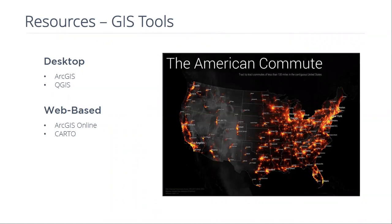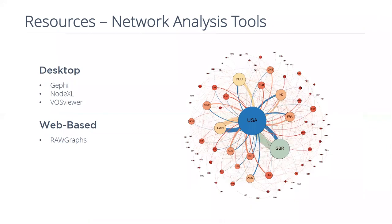For network analysis — looking at how different entities like people or publications have relationships with each other — Gephi is probably the most popular tool right now. It is very buggy and difficult to use, with a lot of technical terms you'll have to look up, but it's free and open source. NodeXL is an extension you can add to Microsoft Excel if you have a PC. VOSviewer is a very popular tool for bibliometric analysis — looking at networks of researchers, publishers, citations, and things like that. The health sciences library does a lot of work with VOSviewer.